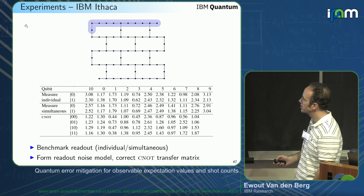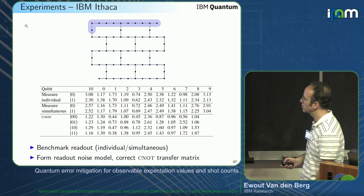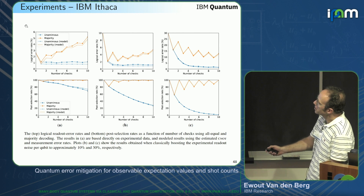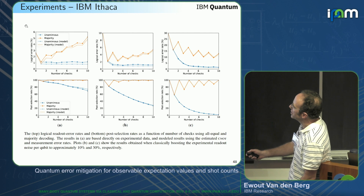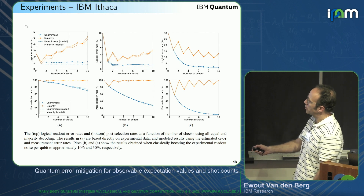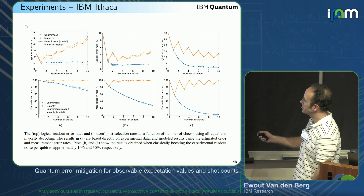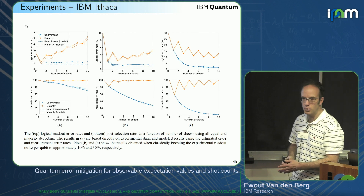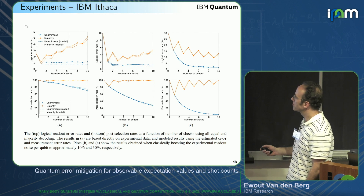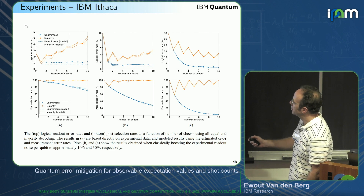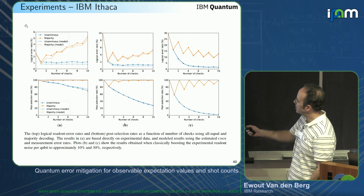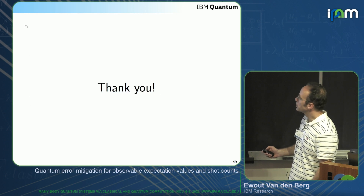These experiments on a chain of qubits measure one qubit while adding more and more readout checks. Initially the error is around 2.5%. Applying one check brings it down, but it doesn't go much further with post-selection alone. With majority sampling, it zigzags because at even numbers of checks you cannot define majority — if you have two zeros and two ones, you can't classify the result and have to throw it out. When the readout error is increased classically to simulate worse noise, you see how additional checks would behave in that case.